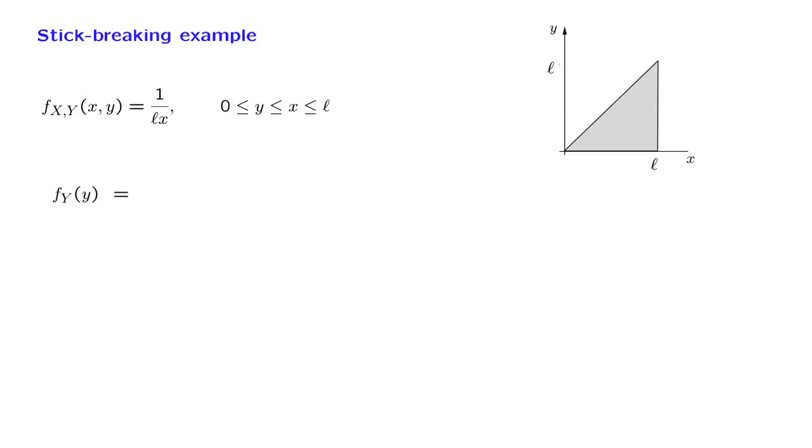Let us now continue with some calculations. Let us find the marginal PDF of Y. How do we do it? Since we have in our hands the joint PDF, we can find the marginal by integrating the joint. And in our case, the joint is equal to 1 over LX, and we integrate over all X's.